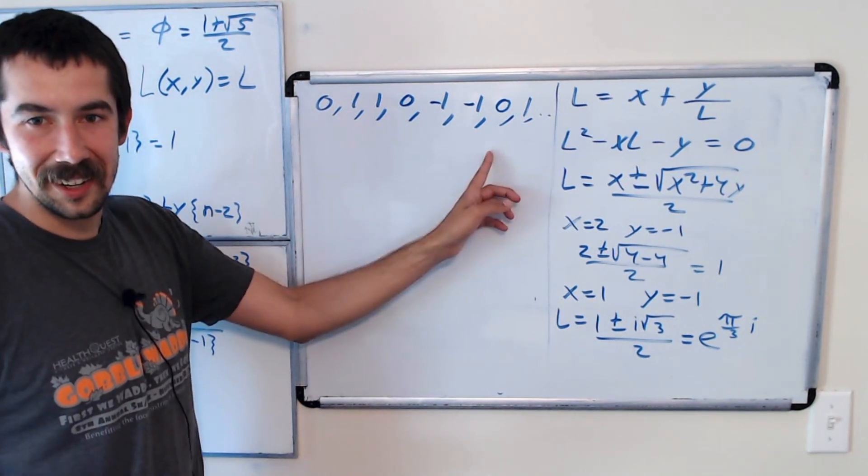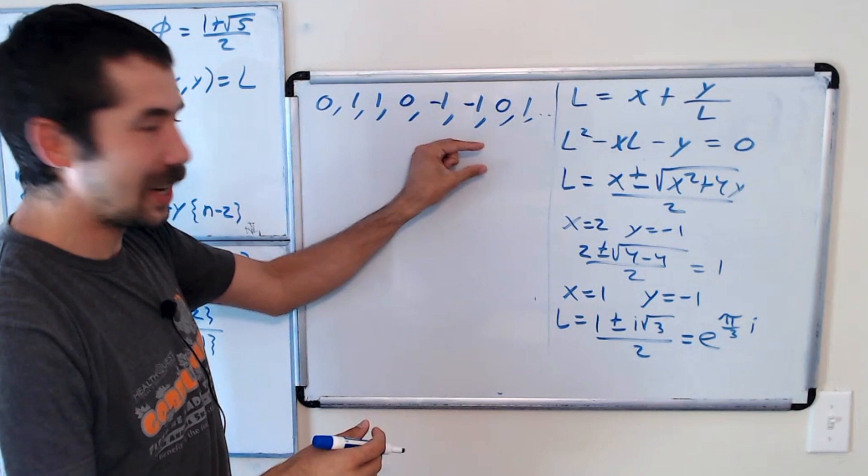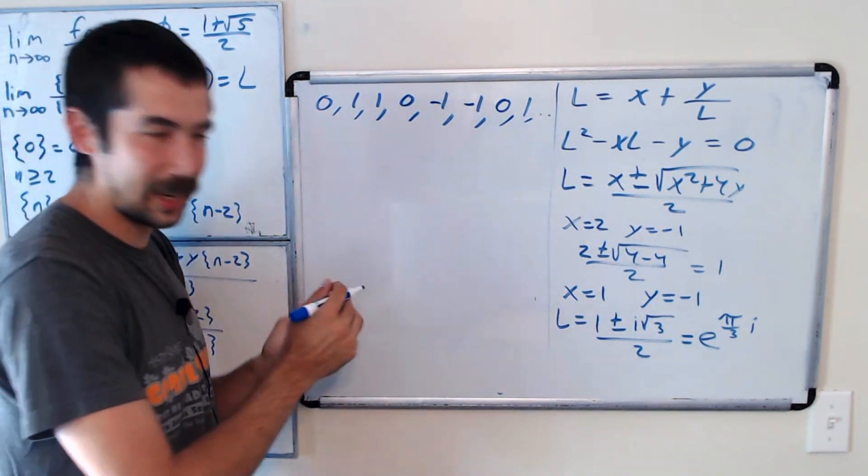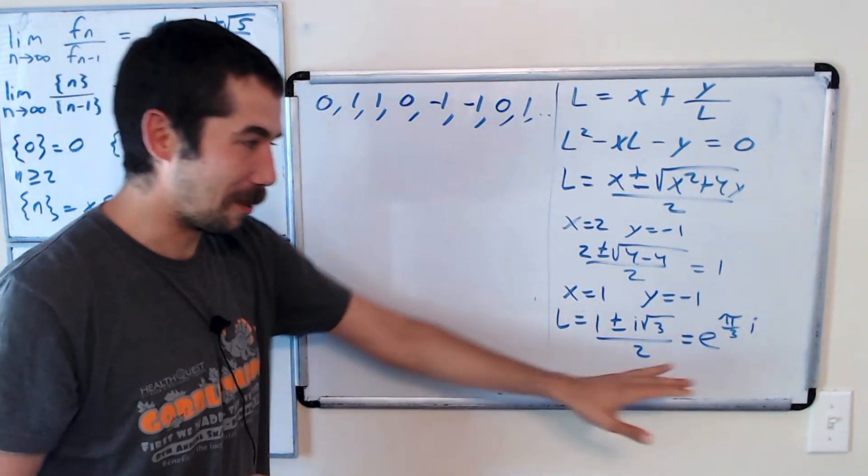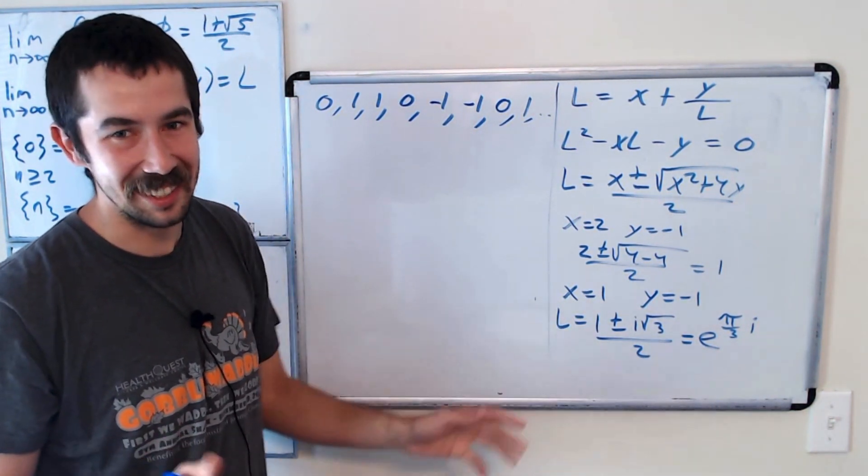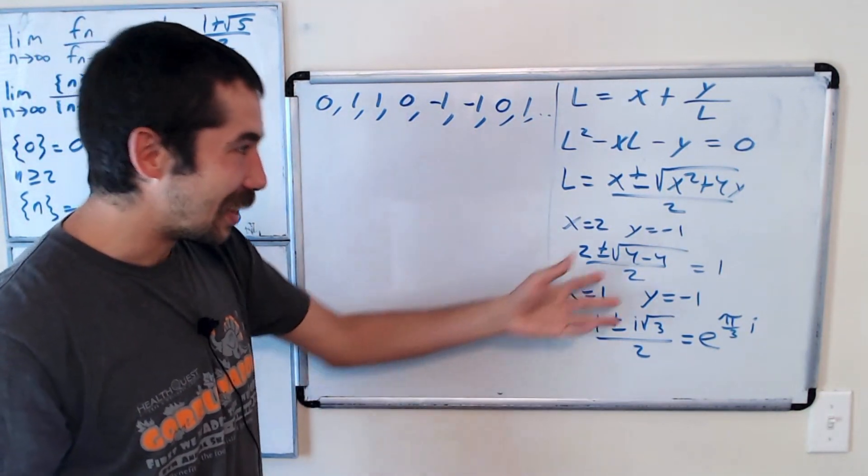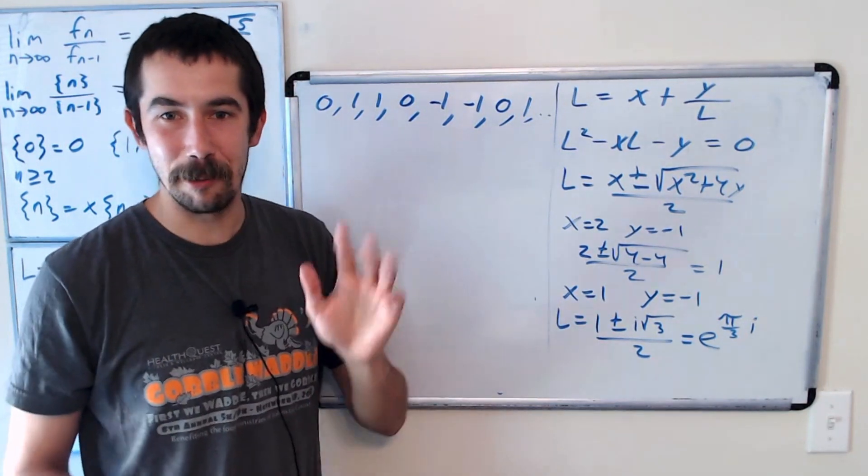So this sequence here, if you take the ratio of consecutive terms and then take the limit as n goes to infinity, we showed it converges to this value here. It doesn't really, it doesn't converge. But that's what the math says. Well, let me know if you like this video. I thought this was pretty interesting at the end. Thanks for watching.